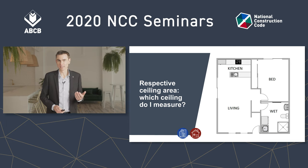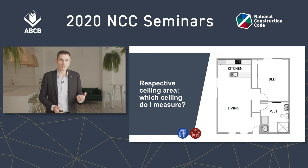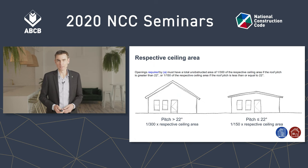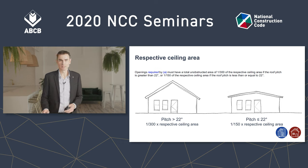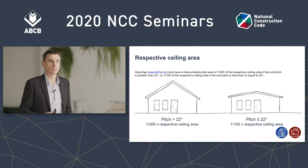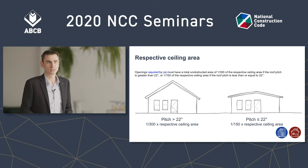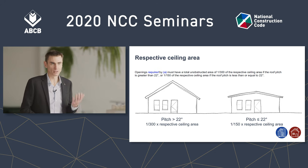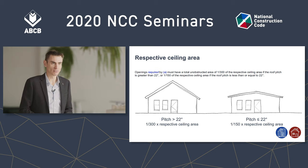The question is: when you talk about the respective ceiling area, which ceiling do you mean — the ceiling of the room being ventilated, or the whole ceiling that the roof covers? For background, the new provisions require that some exhaust systems discharge directly outside or into a ventilated roof space. To qualify, there must be evenly distributed openings, and the minimum aggregate area is calculated by applying a fraction to a ceiling area: 1/300 of the respective ceiling area for a roof pitch of more than 22 degrees, or 1/150 for a shallow roof with a pitch of 22 degrees or less.